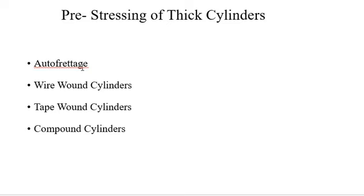Autofrettage is commonly used in gun barrels. It not only increases the pressure capacity of the cylinder but also improves the endurance strength. This is the first method of pre-stressing in the thick cylinder.